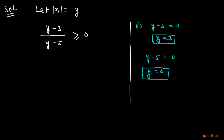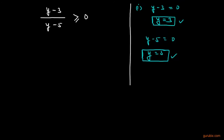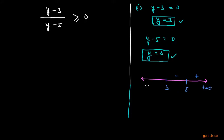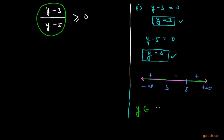These are two critical points and we have to place them on a real number line. Here is 3 and here is 5. We place a positive sign in the outer left region, a negative sign in the middle region, and a positive sign in the outer right region. Since the inequality is positive, the regions with positive signs give the solution.